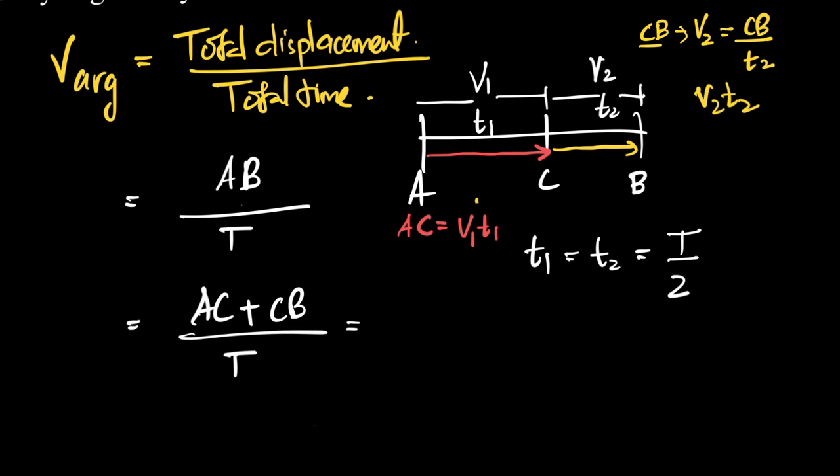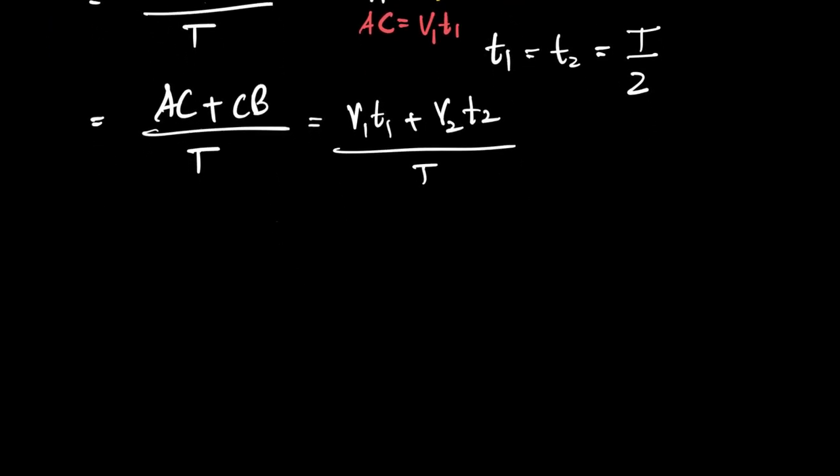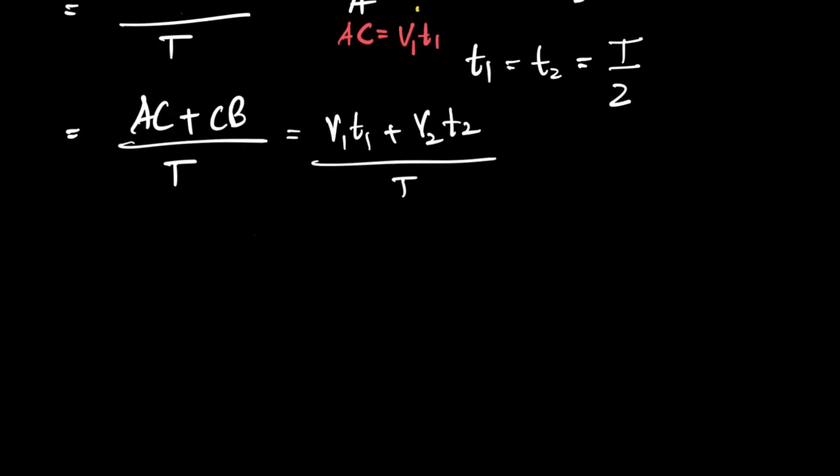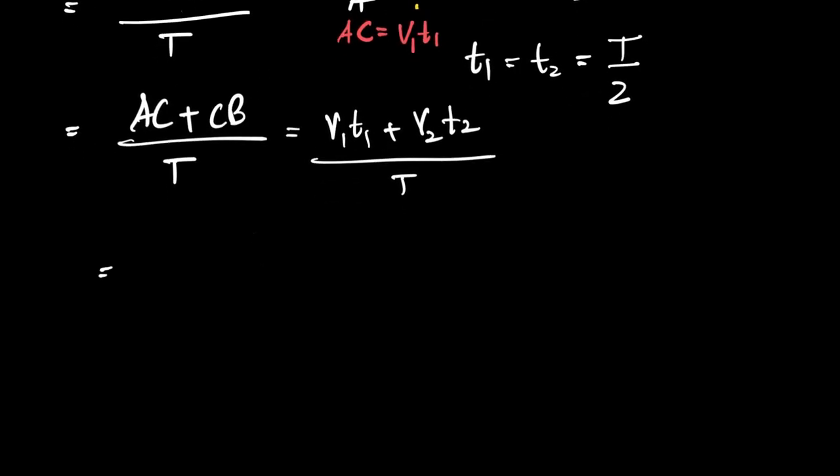In which case, we can say that AC is basically v1t1 plus CB, which is basically v2t2, and the whole upon this becomes T. Now if you go further, what is v1t1 plus v2t2? We can say that v1 times what is t1? t1 is T by 2, because the question says half time. Plus what is v2t2? t2 is again half time, so this will become v2 times T by 2, and the whole upon T.